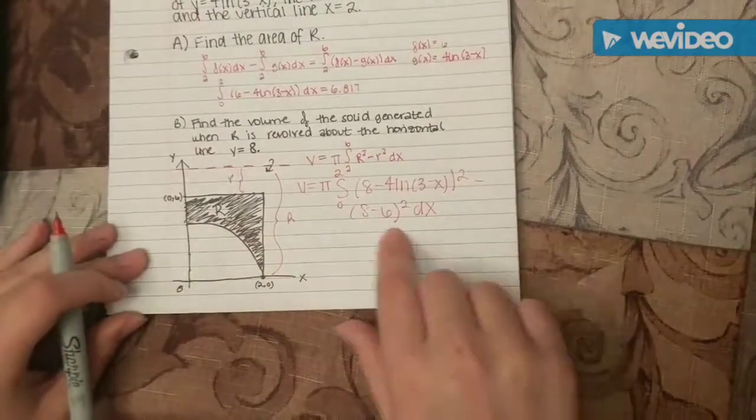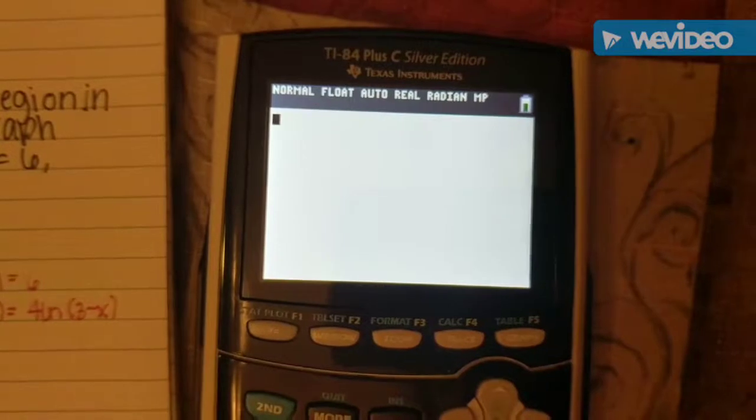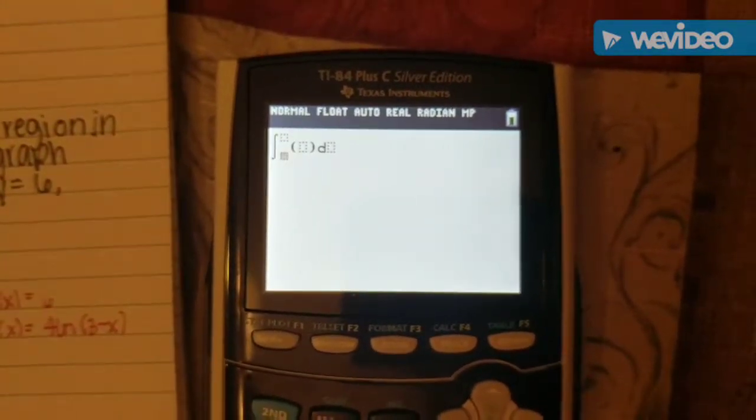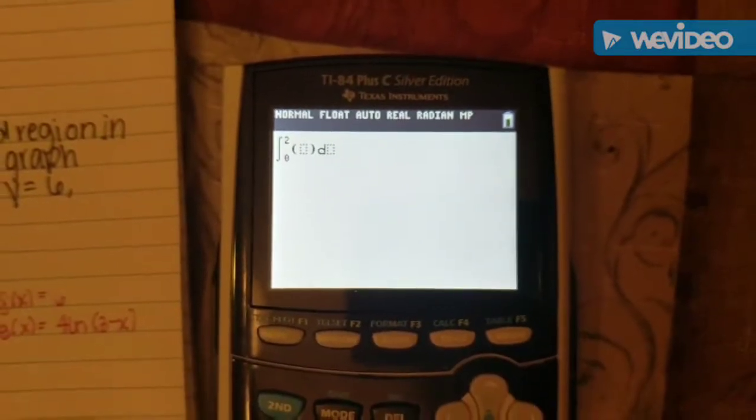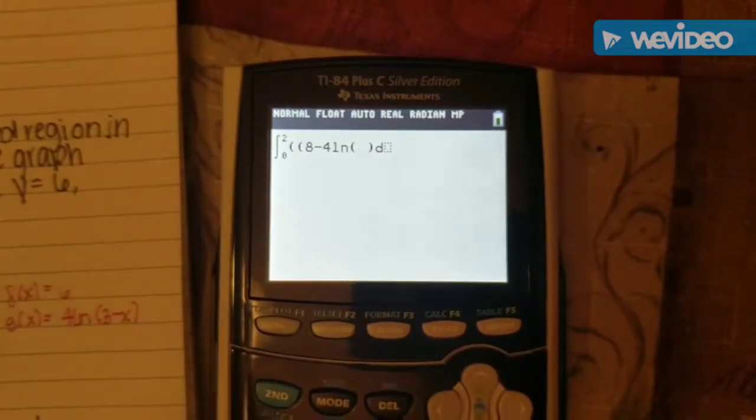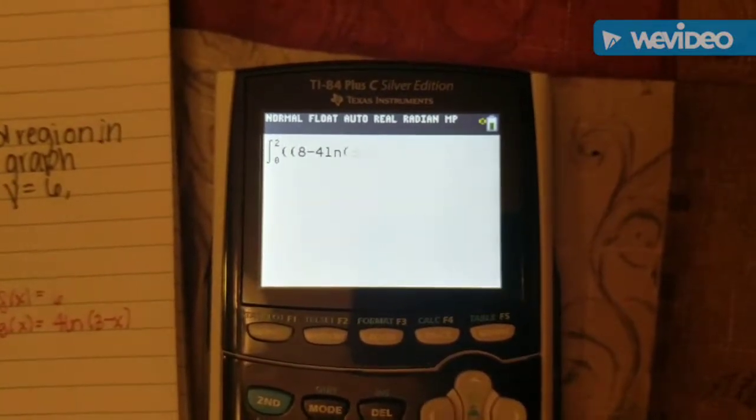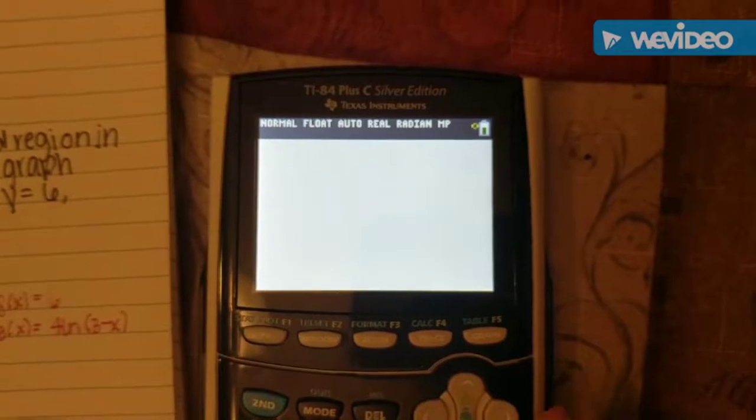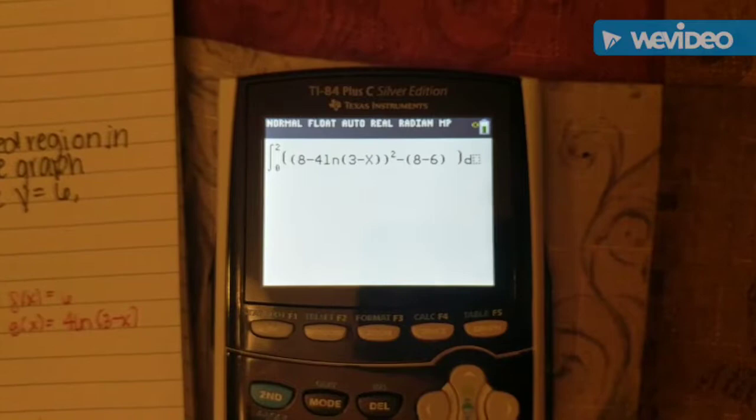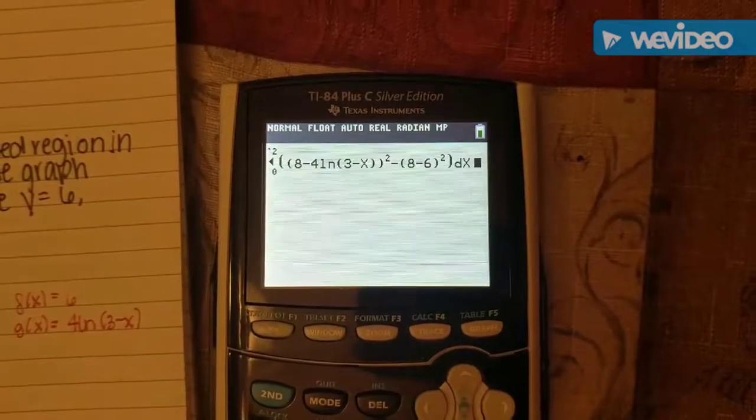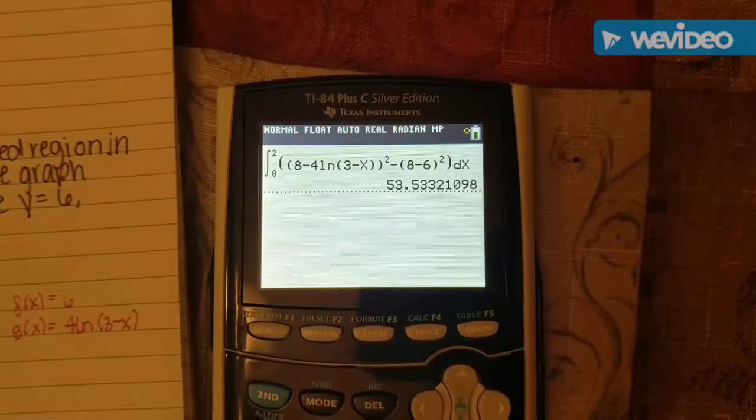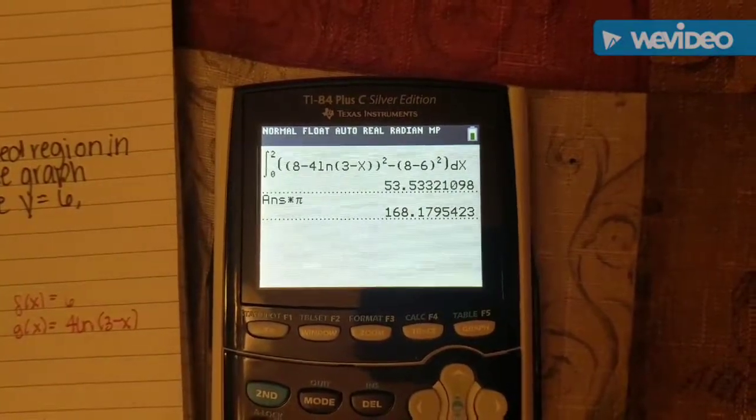Then what you're going to do is plug this into your calculator. We're going to go to math 9 and have 0 to 2 of 8 minus 4 natural log of 3 minus x, and then you're going to square that, subtracted by 8 minus 6 squared dx. You're going to have this, but you also need to multiply it by pi, and you get the answer 168.180.